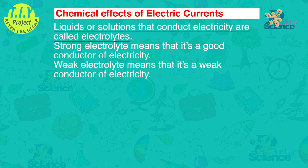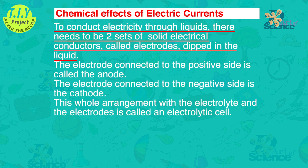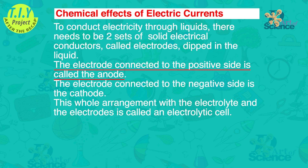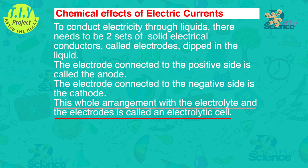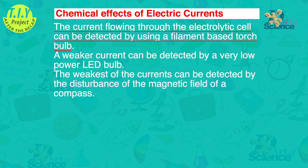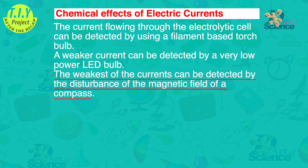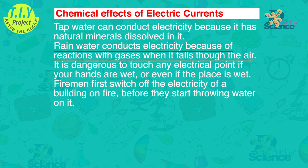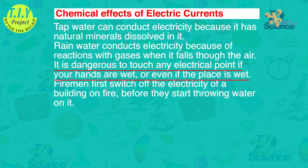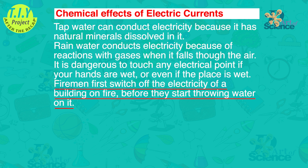Liquids or solutions that conduct electricity are called electrolytes. A strong electrolyte is a good conductor of electricity; a weak electrolyte is a weak conductor of electricity. To conduct electricity through liquids, there needs to be two sets of solid electrical conductors called electrodes dipped in the liquid. The electrode connected to the positive side is called the anode, and the one connected to the negative side is called the cathode. This whole arrangement is called an electrolytic cell. Current can be detected by a filament torch bulb, a weaker current by a low power LED, and the weakest by compass deflection. Tap water conducts because of dissolved mineral salts; rain water conducts due to reactions with gases. It is dangerous to touch electrical points with wet hands, and firemen switch off electricity before throwing water on a fire.